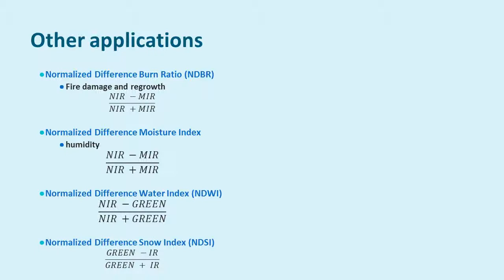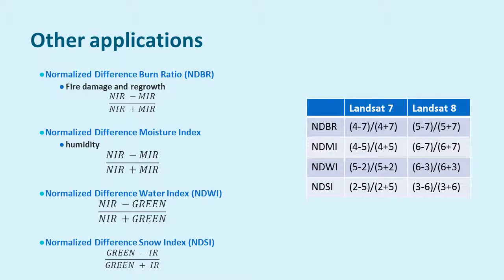If you're using Landsat as your basis, you may be wondering which bands to use. For the Normalized Difference Burn Ratio, use bands 4 and 7 for Landsat 7, or bands 5 and 7 for Landsat 8. For the Moisture Index, use bands 4 and 5 for Landsat 7, or bands 6 and 7 for Landsat 8. For the Water Index, use bands 5 and 2, or 6 and 3. For the Snow Index, use bands 2 and 5, or 3 and 6.